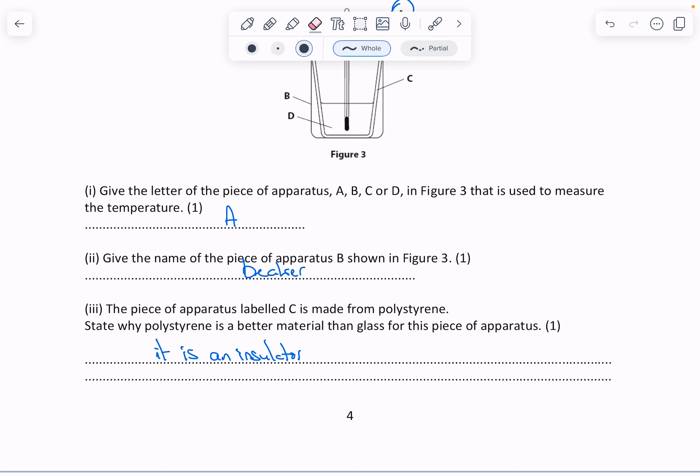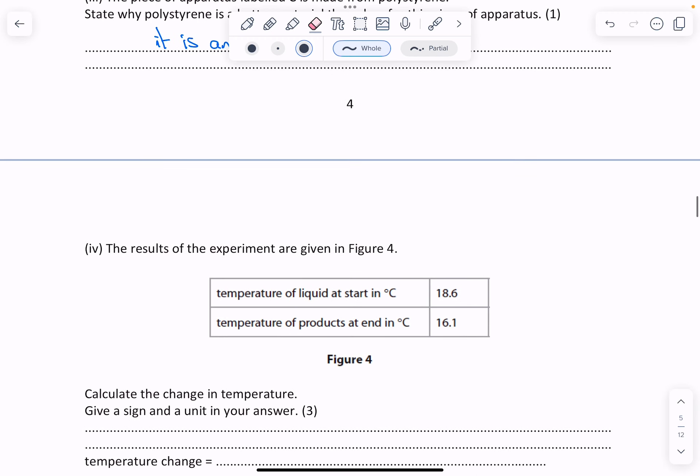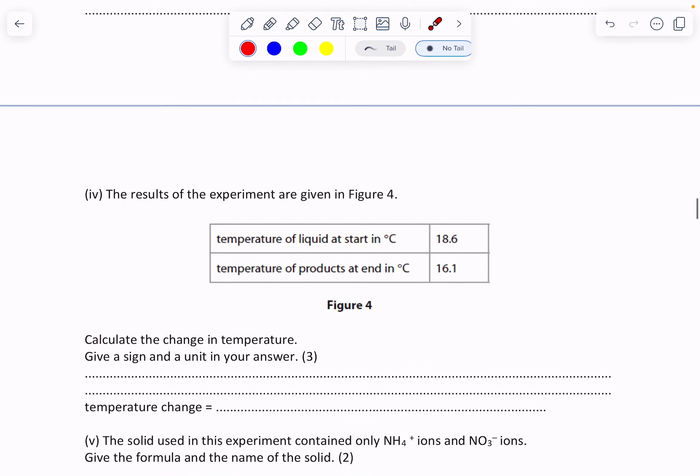Continuing, it wants us to calculate the change in temperature. So we have the temperature at the start and temperature at the end. Change in temperature: we have 18.6 and we're going to subtract 16.1. So 18.6 minus 16.1 is minus 2.5. This temperature has actually dropped, that's why it's a negative number, and that's the temperature change.